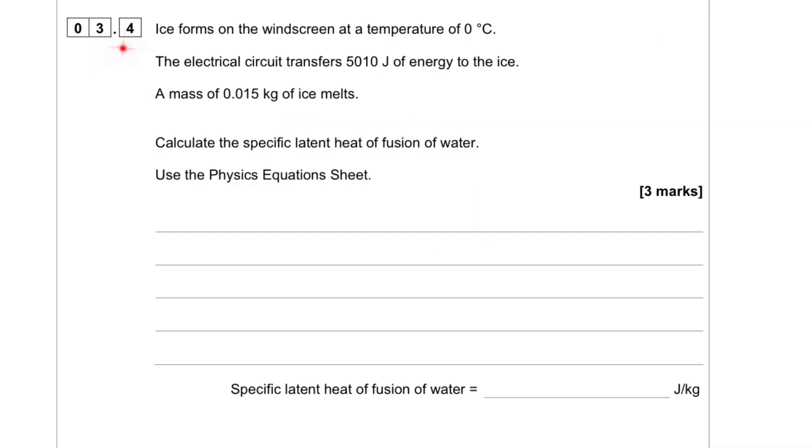Question 3.4. Ice forms on the windscreen at a temperature of 0 degrees Celsius. The electric circuit transfers 5010 joules of energy to the ice. A mass of 0.015 kilogram of ice melts.